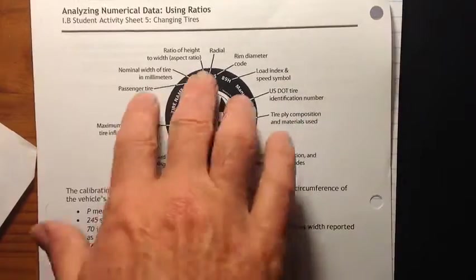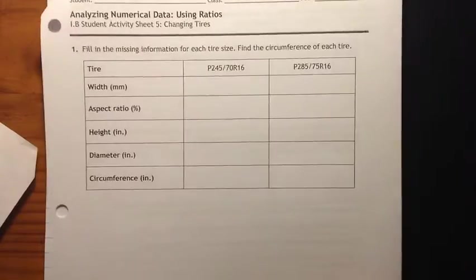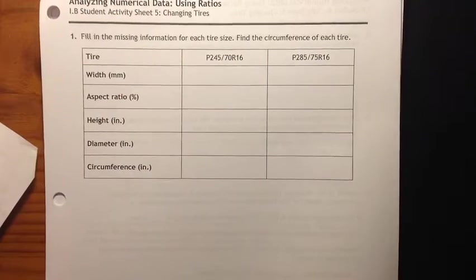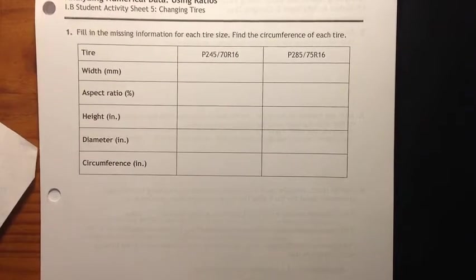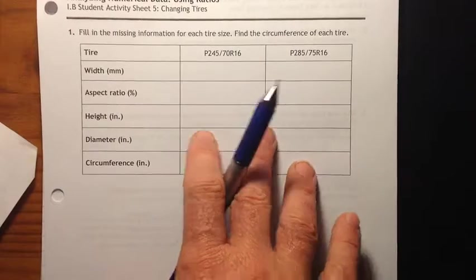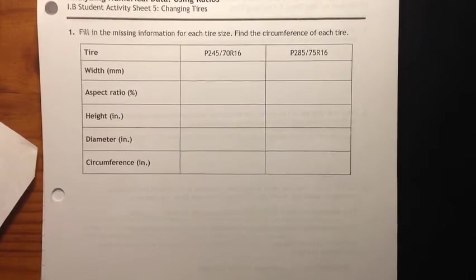And then there's some other numbers here too, but we're not going to even use those. So now we're going to use all this information to figure this out. Fill in the missing information for each tire size. Find the circumference of each tire. So we're going to do all of this together. And then we're going to answer some questions. And then you're going to do this same sort of thing with two different tires for your practice.